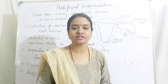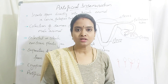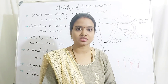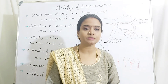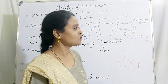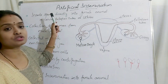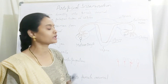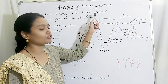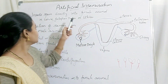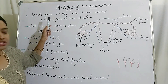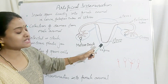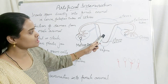Good morning students, welcome to Leela's tutorial. Today we'll discuss the artificial insemination process. In artificial insemination, we introduce or insert sperm cells directly into the female reproductive system of the animal. The sperm cells can be introduced into the cervix, or